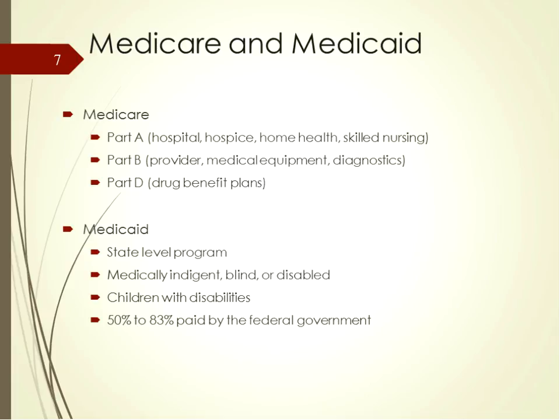The primary payer of health insurance is Medicare. Part A covers organizational services such as hospitals and home health. Part B, which is optional, provides for healthcare provider payments, medical equipment, and diagnostic tests. In 2006, Part D, the drug benefit program, went into effect. Medicaid is a state-level program with costs shared between the state and the federal government. The funding from the federal level is dependent on the per capita income of the state. In addition to covering the medically indigent, Medicaid also covers persons with disabilities.